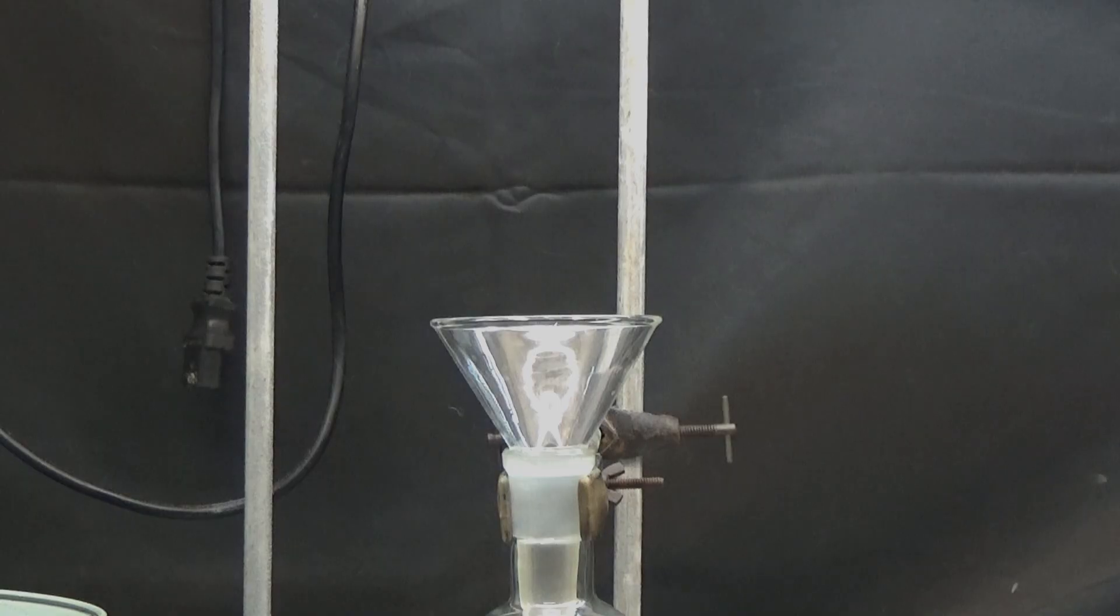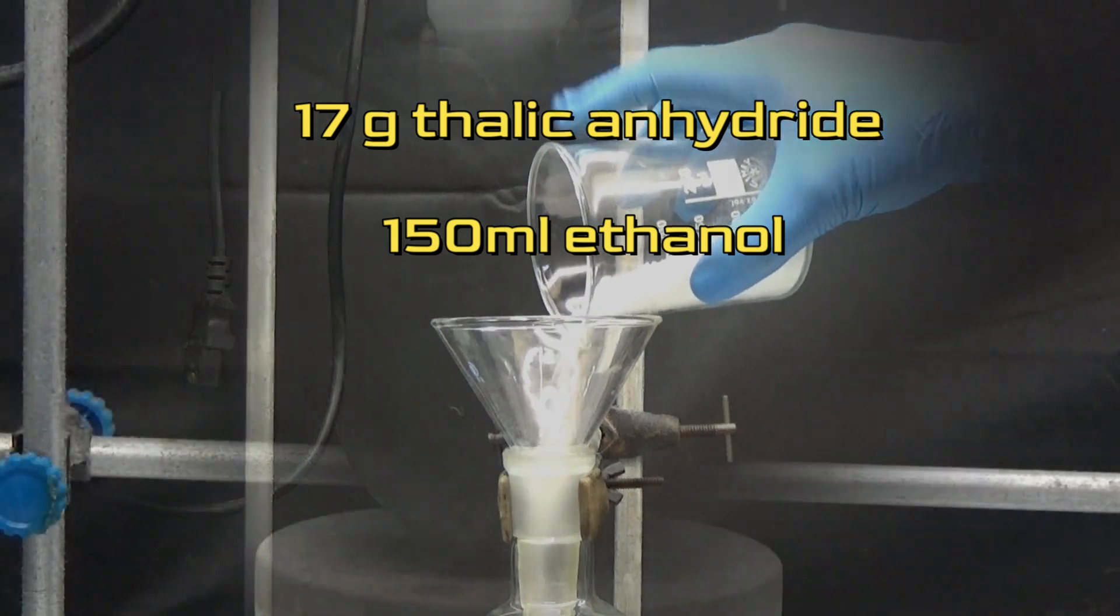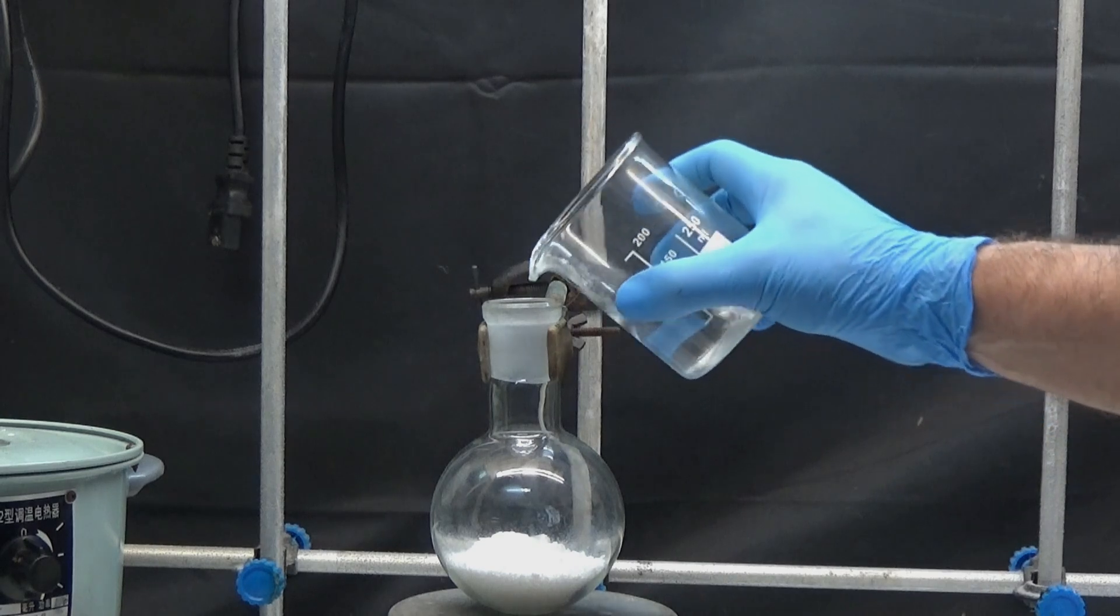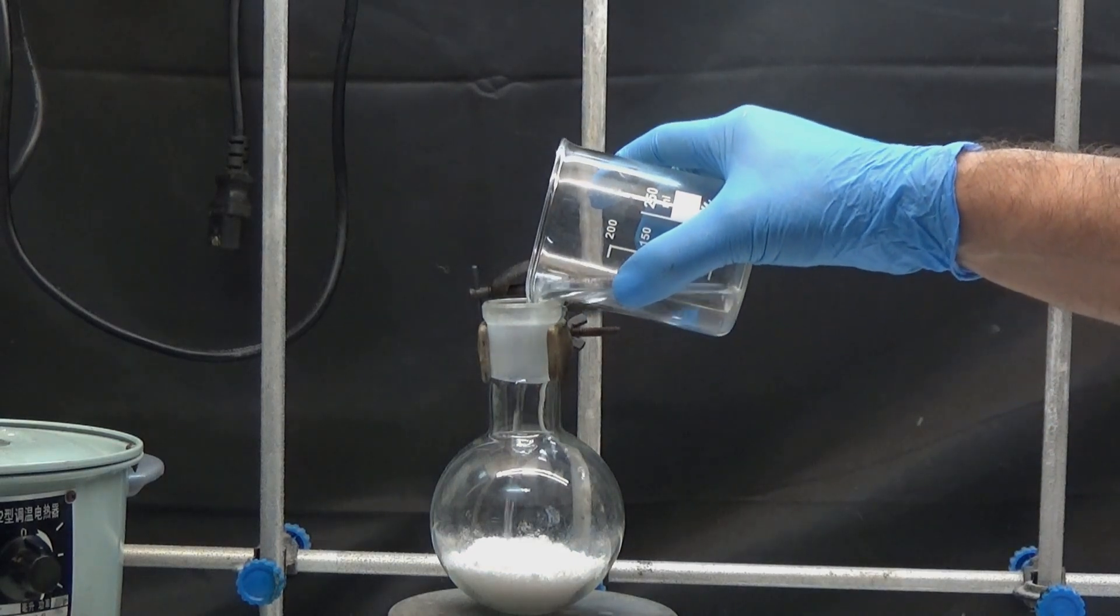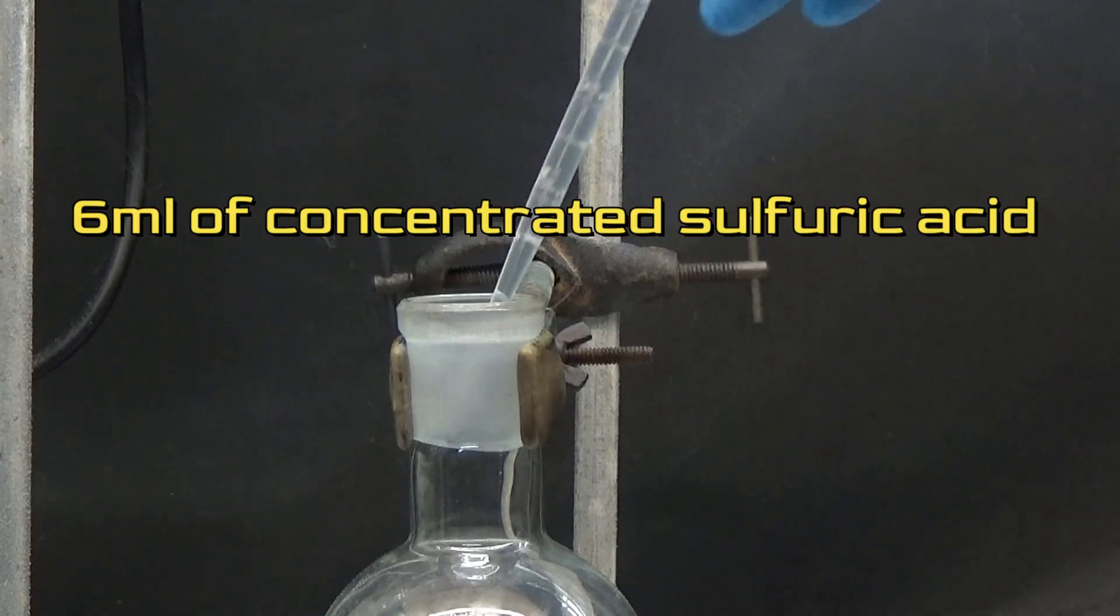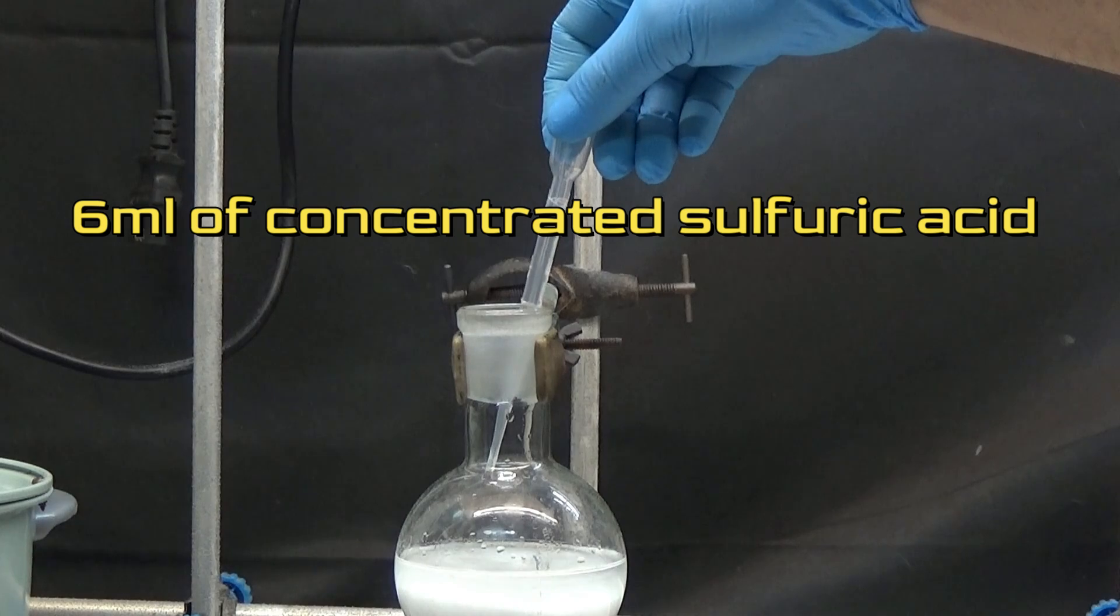In a 250ml flask, we put 17g of phthalic anhydride and dilute it with 150ml of ethanol. After all the substances have been dissolved, 6ml of concentrated sulfuric acid is slowly added.